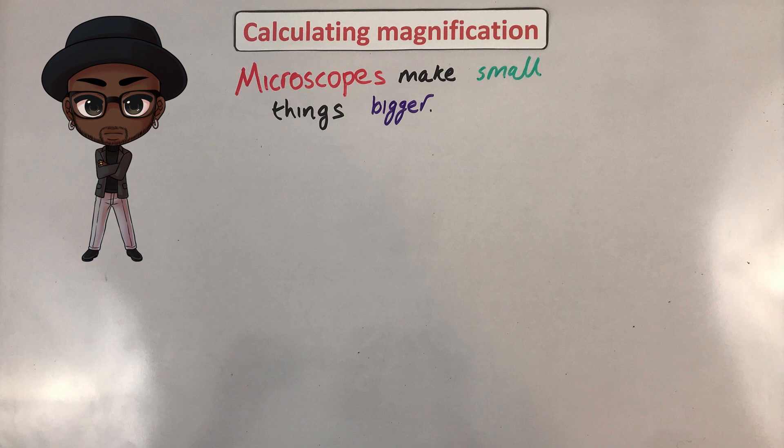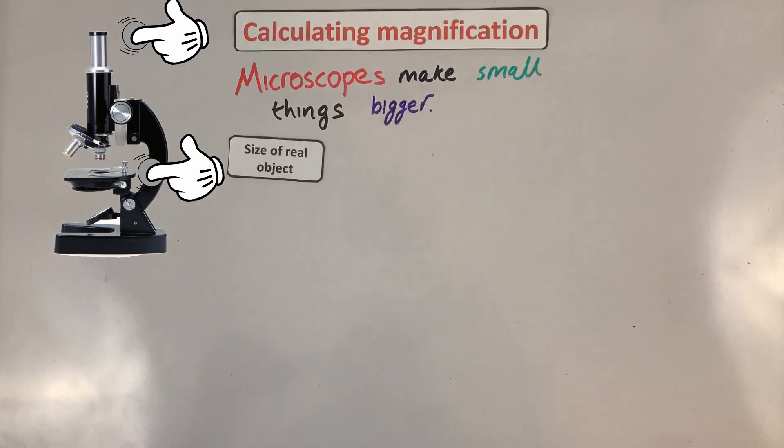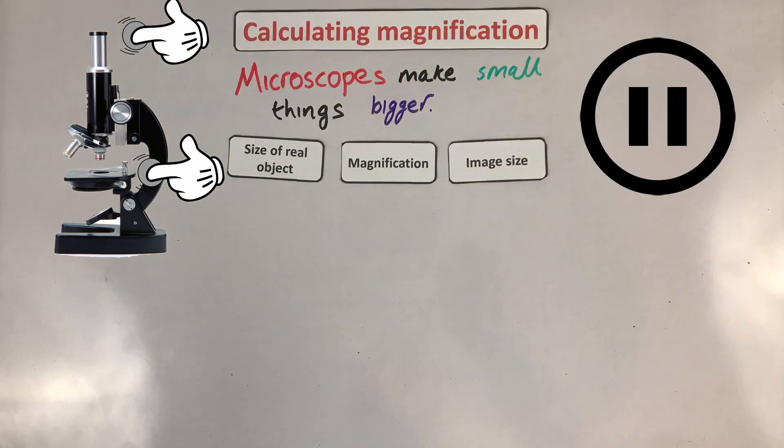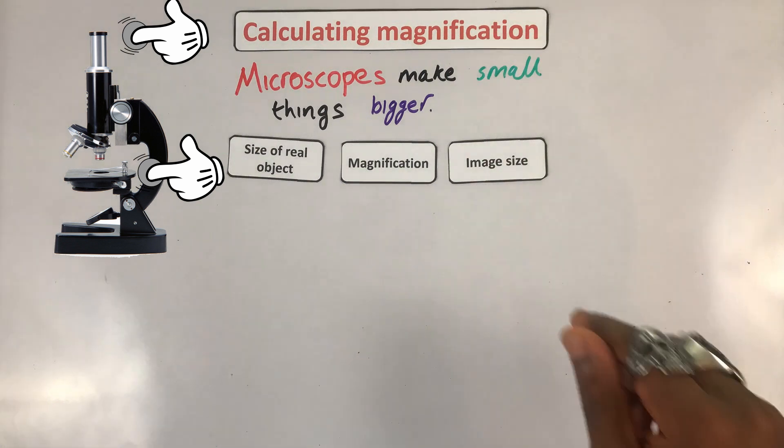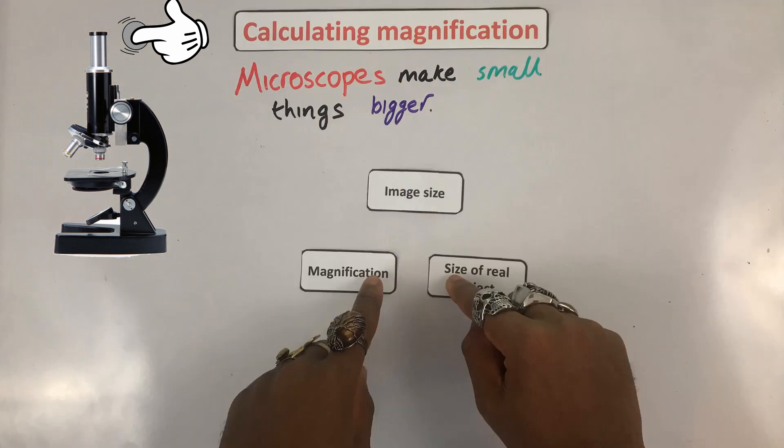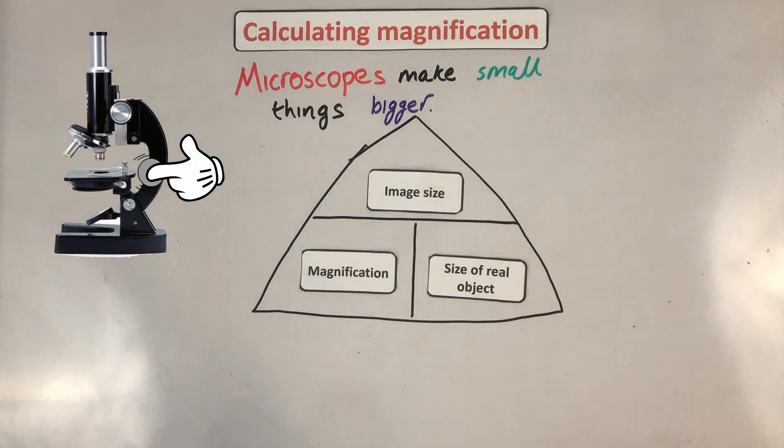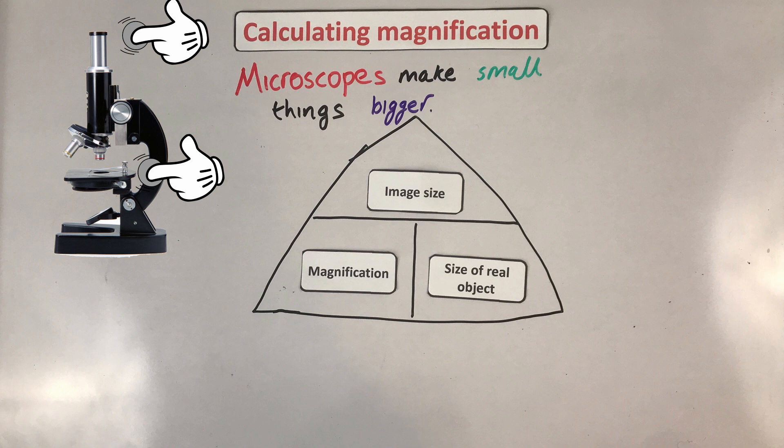Let's build our equation. Look at our diagram again. Our small object goes here. The larger image is formed here. Using these three boxes, pause the video and see if you can work out what goes where to form our equation. Remember I said that the object goes here. So on the bottom. The larger image is formed on the top. So magnification has to go on the bottom for our triangle.